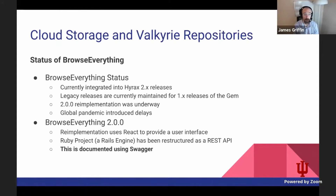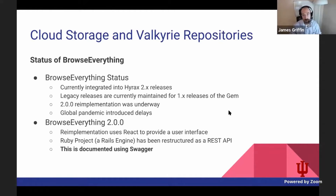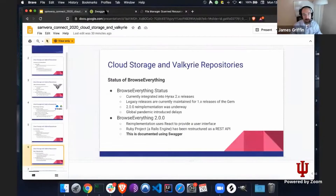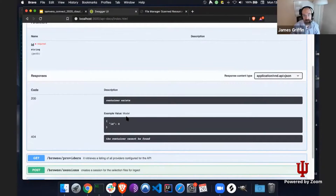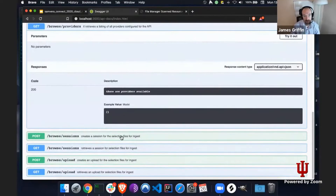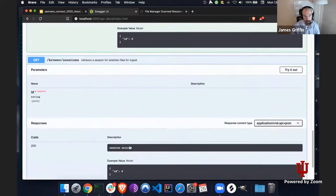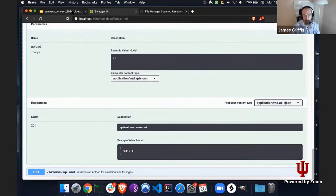For Browse Everything 2.0, the re-implementation is using React, the JavaScript library, to provide a user interface. The Ruby component of the gem is being restructured to offer a REST API, documented currently using a project known as Swagger. Spinning this up locally, one has the ability to begin to interact using the Swagger API user interface with the endpoints.